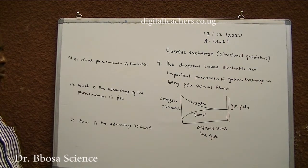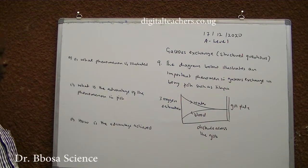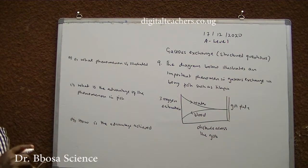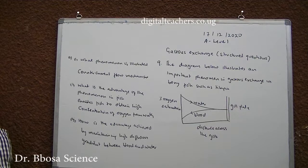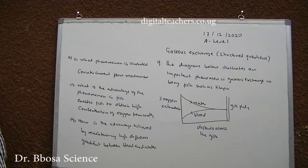Number 9: The diagram below illustrates an important phenomenon in gaseous exchange in bony fish such as tilapia. What phenomenon is illustrated? What is the advantage of the phenomenon in fish? How is the advantage achieved? You can pause and answer. The phenomenon is called the counterflow mechanism of gaseous exchange. Counterflow mechanism enables fish to obtain a high concentration of oxygen from water. High concentration of oxygen from water is obtained by maintaining a high diffusion gradient.